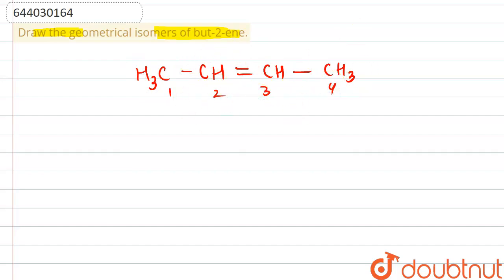The geometrical isomers would be existing in two forms. The first one is the trans one where the same groups are in the opposite direction. So we can just say this is the trans but-2-ene.